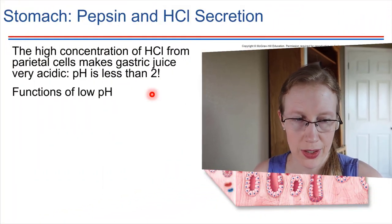The amount of HCL produced by parietal cells leads to a very low pH. The stomach has a pH of less than 2 — usually around 1.5 to 2. That very low pH has a few key functions. We've already mentioned that it helps to kill a lot of the bacteria that we ingest, but it also does some other important things.